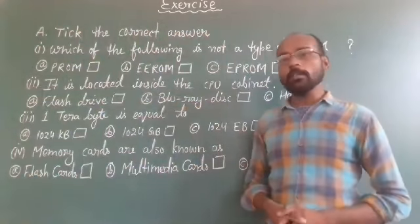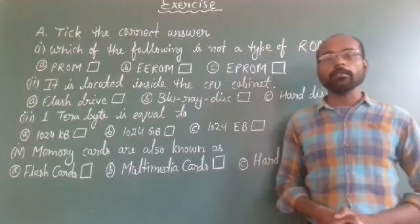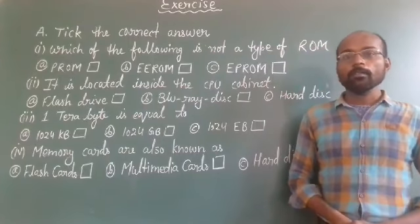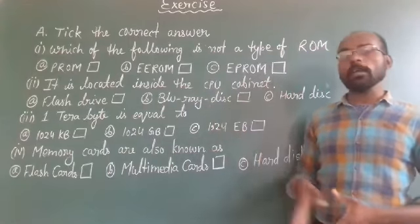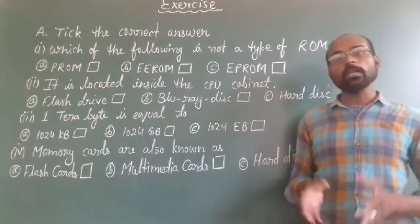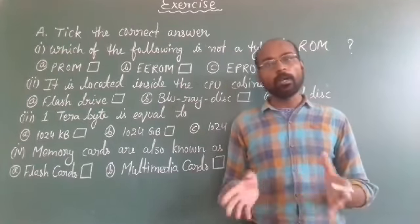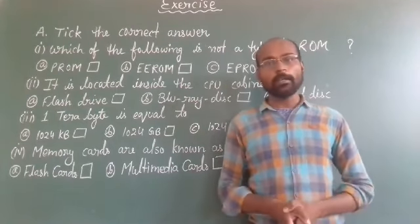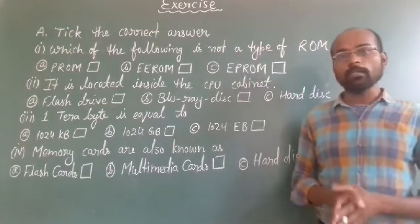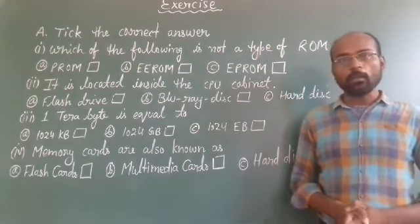Exercise number A is: take the correct answer. There are 4 questions in exercise number A. Each question has 3 options, and one of them is the right answer. You have to choose which one is the right answer.